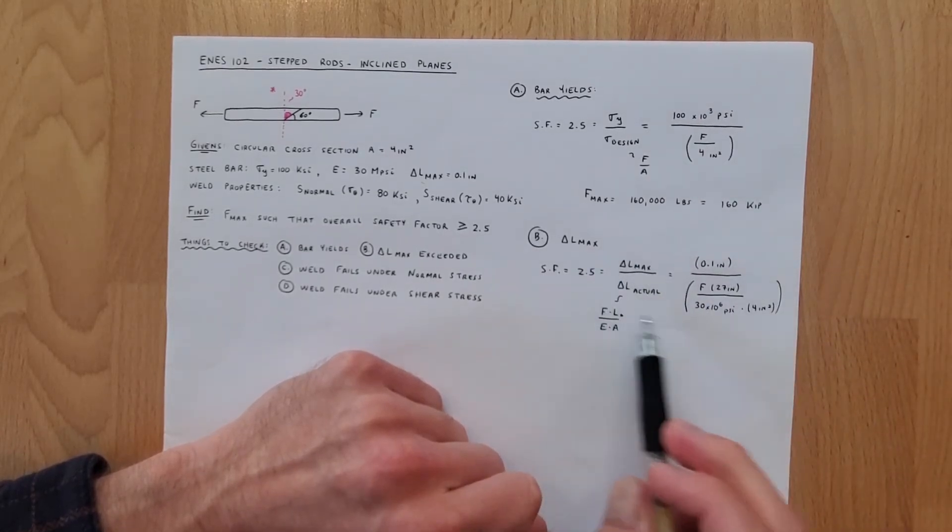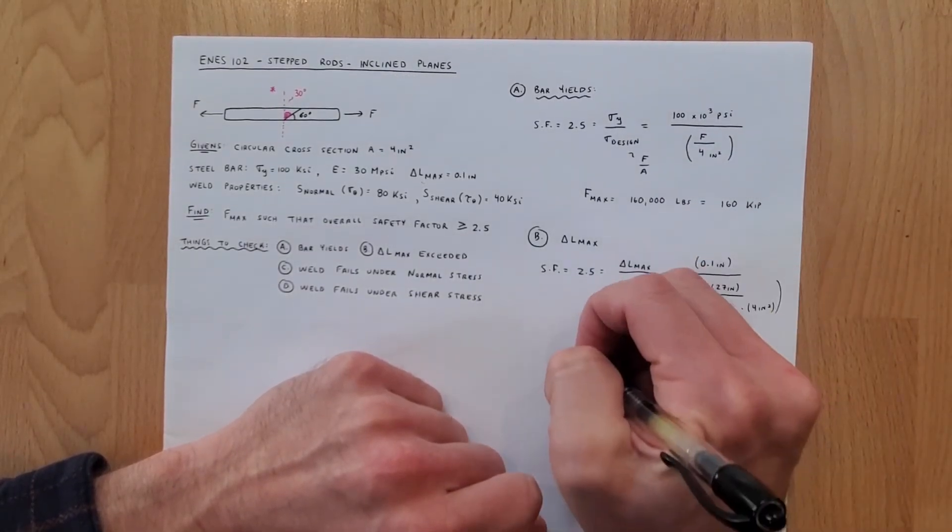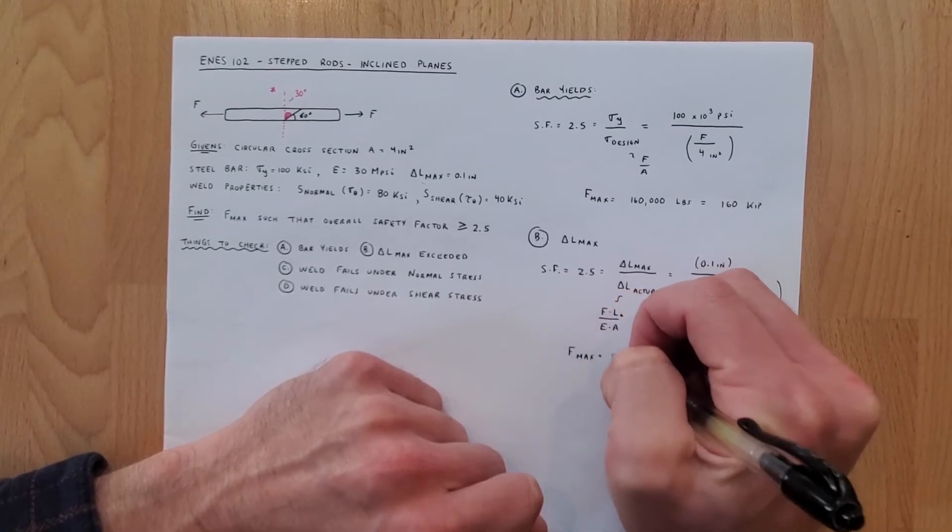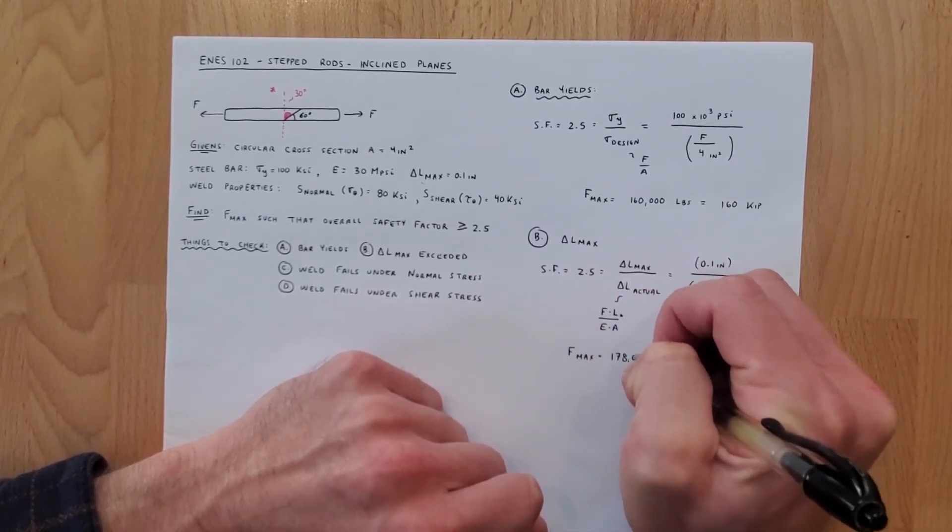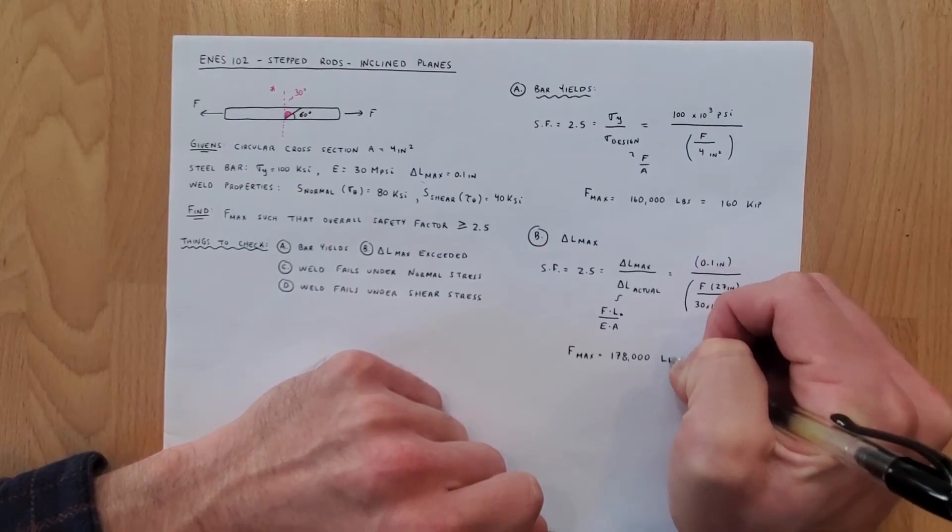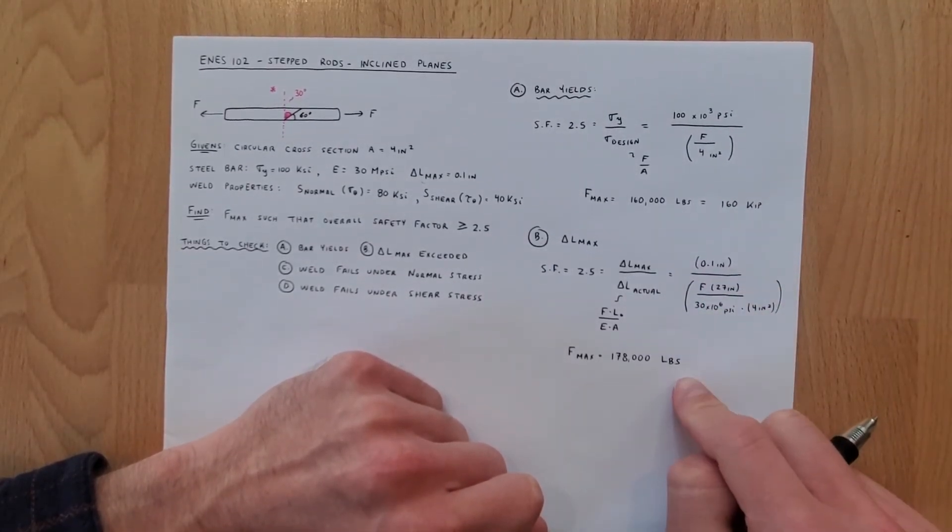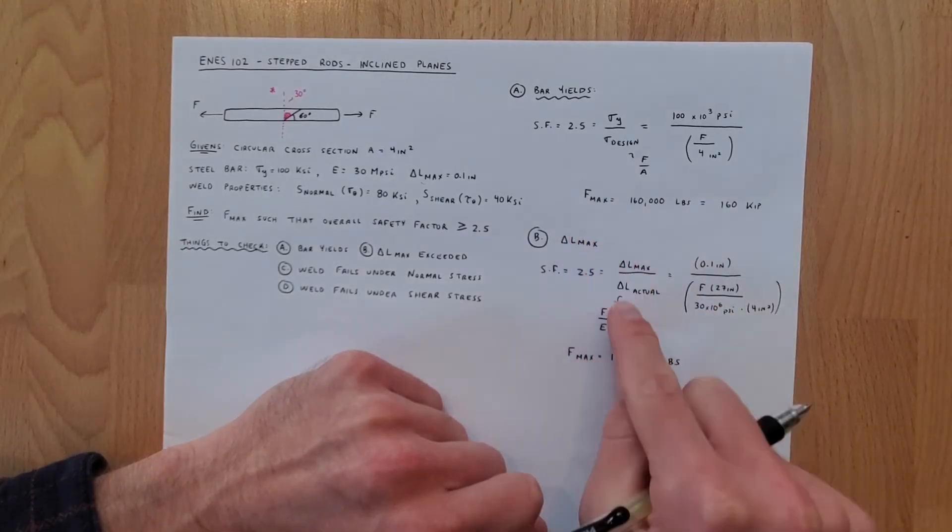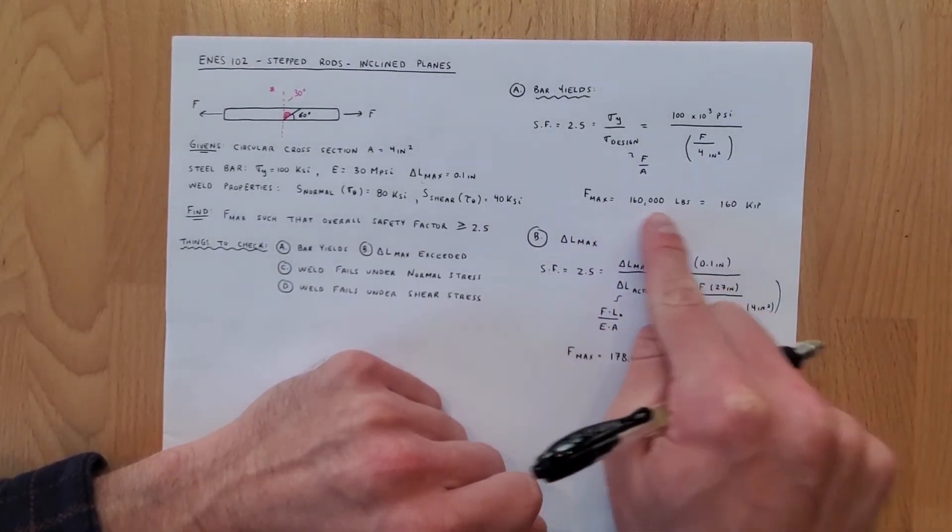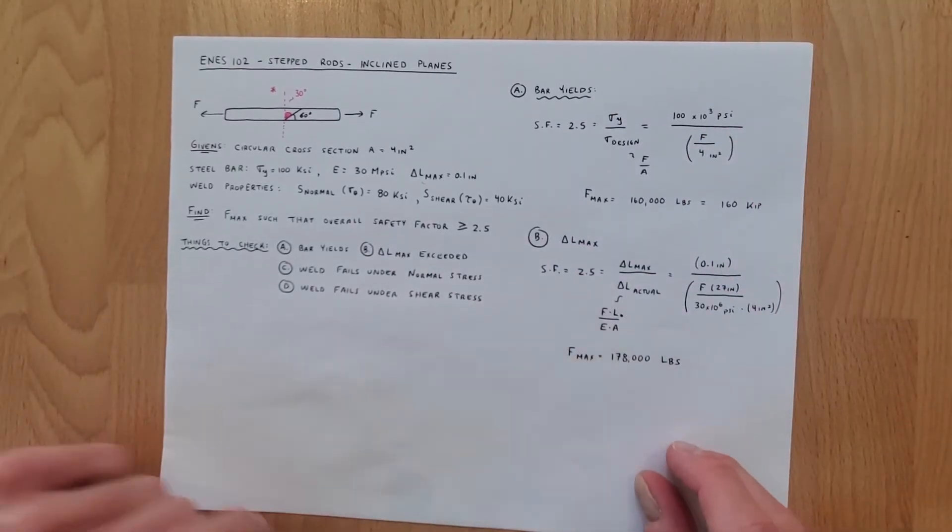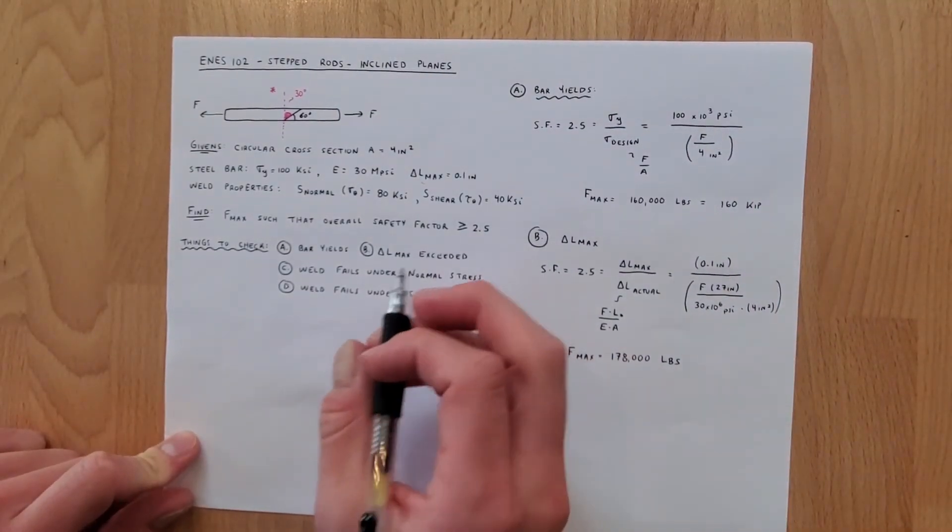So now we've got everything in here except f so we compute f max for this condition we get that f max is equal to 178,000 pounds. So now just looking at these two things right now we can see that f max between these two conditions is 160,000 pounds. The lower force will always govern the problem.